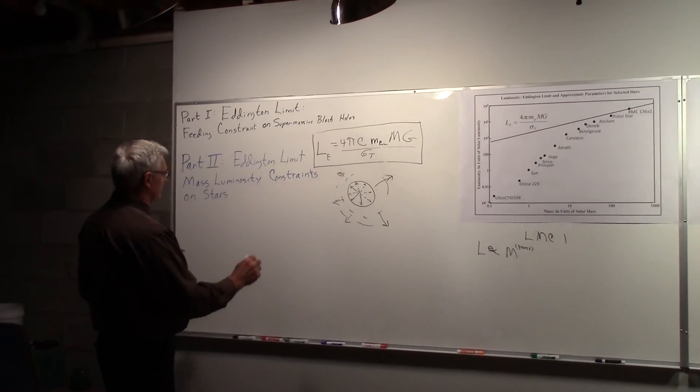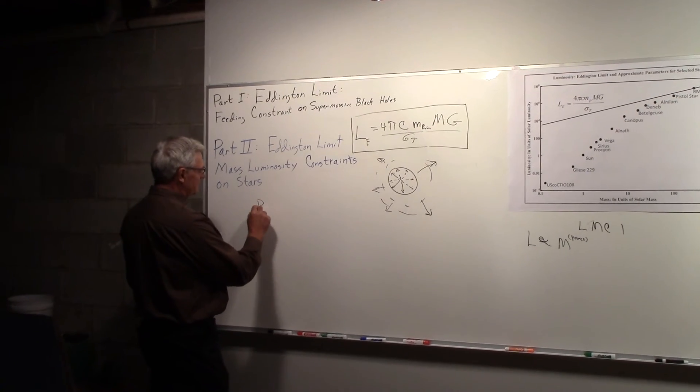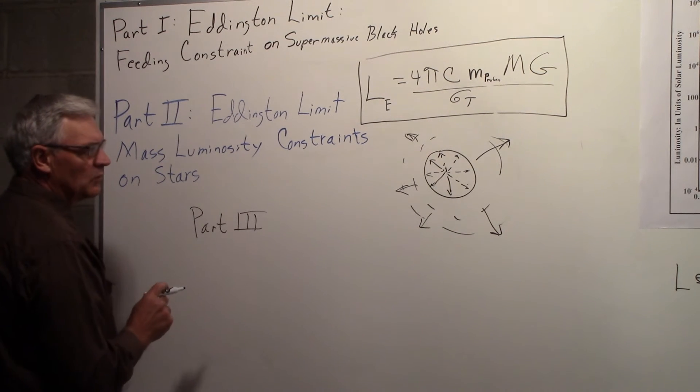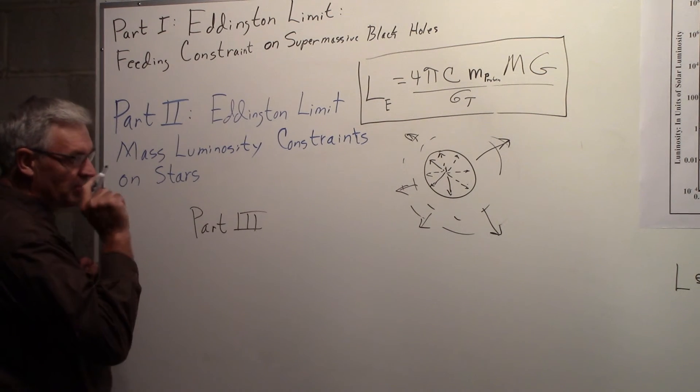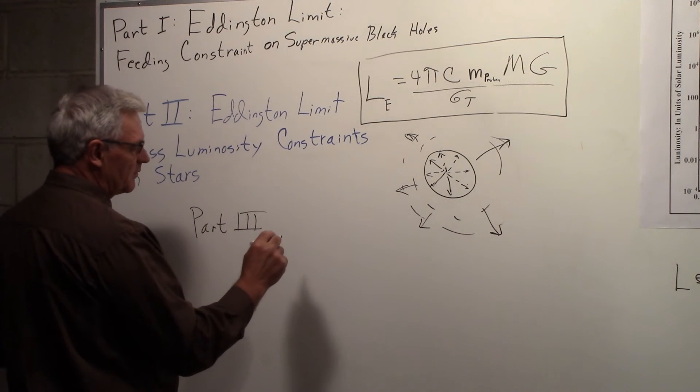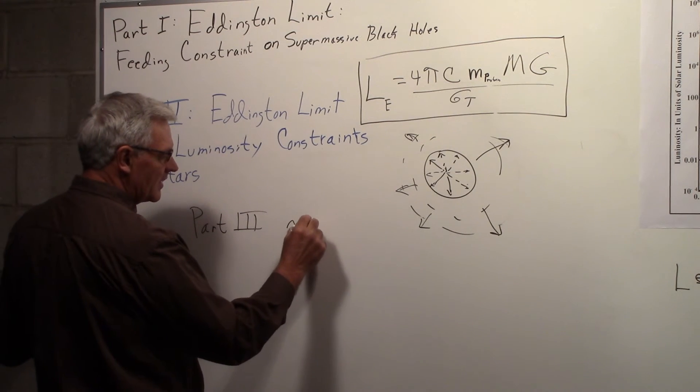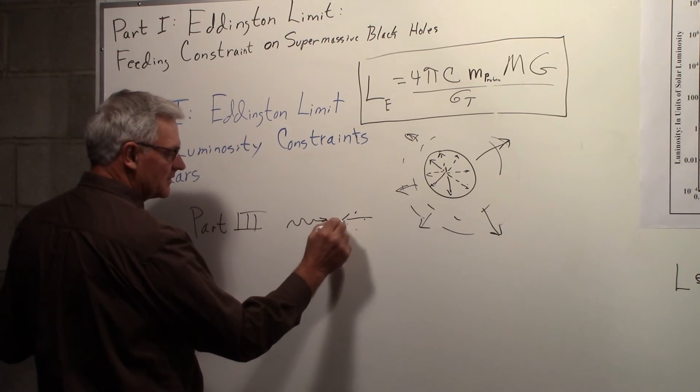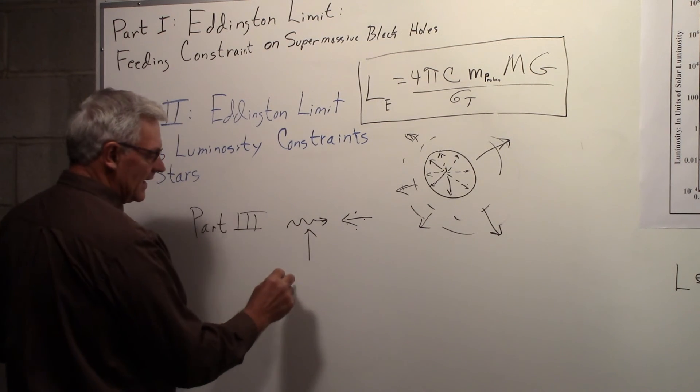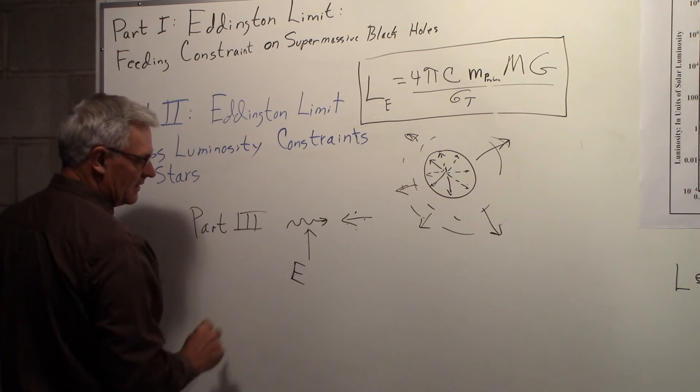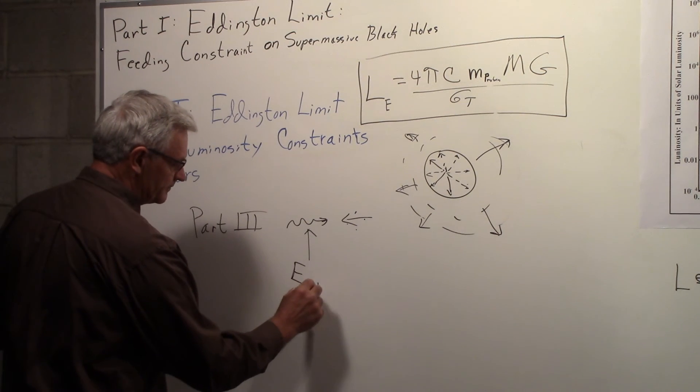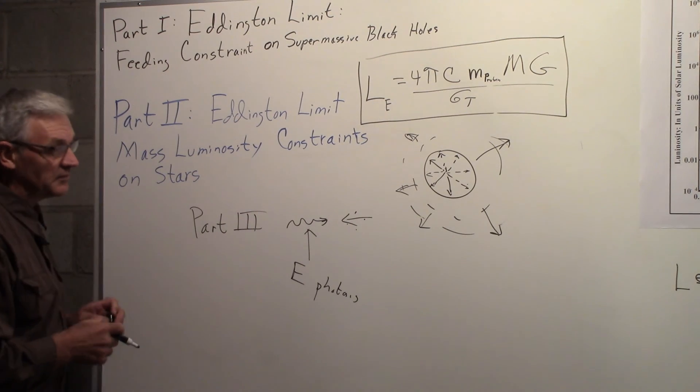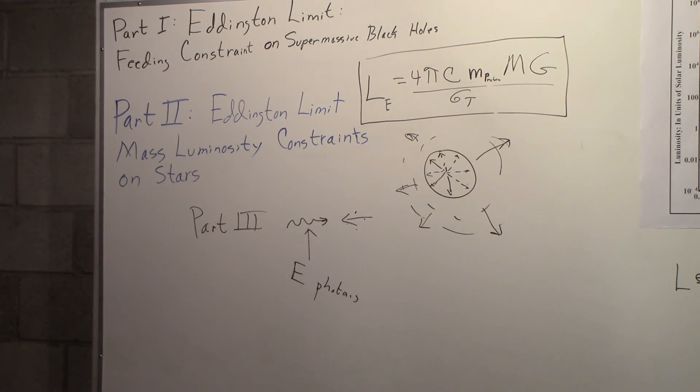What we may do in the future, we may have a part 3. This is part 2 and we may have a part 3. What we'll look at in that case, we'll go back to the supermassive black hole and those photons that were coming out that were interacting with the incoming gas particles. We'll take a look at calculating what the energy of those photons are. So that's what we might try doing in part 3.